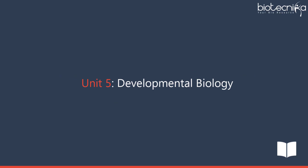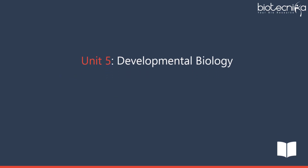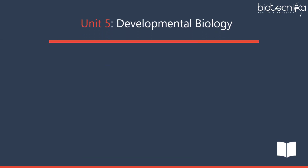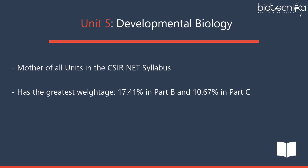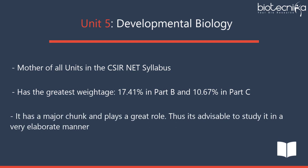Unit 5 – Developmental Biology is the mother of all units in the CSIRNET syllabus. It has the greatest weightage: 17.41% in Part B and 10.67% in Part C. It has a major chunk and plays a great role. It is advisable to study it in a very elaborate manner.